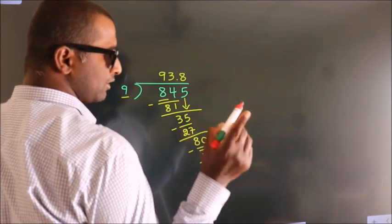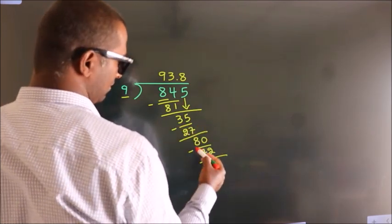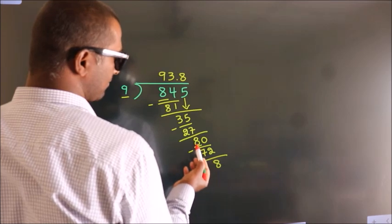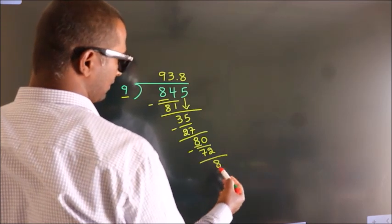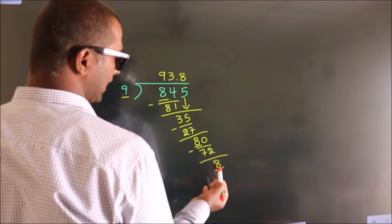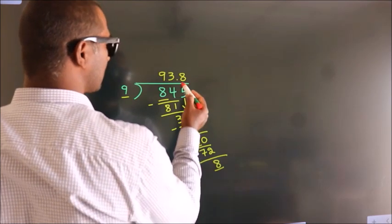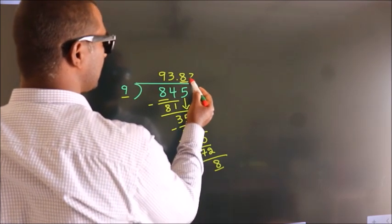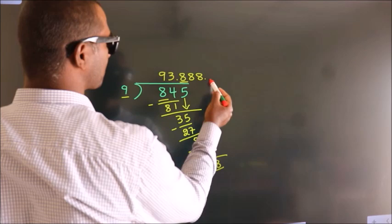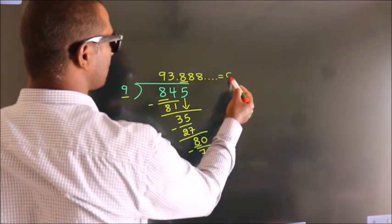Now you observe, we had 8 here and we got 8 again. That means this number keeps on repeating. So this is our quotient.